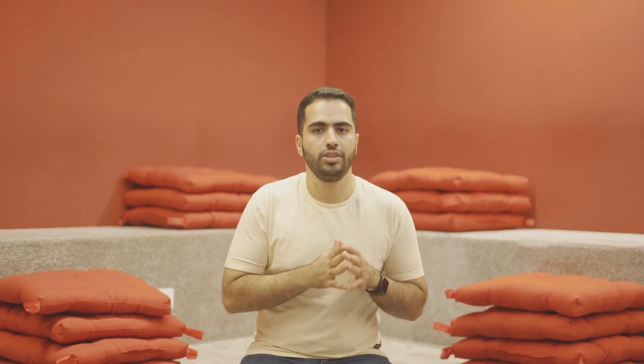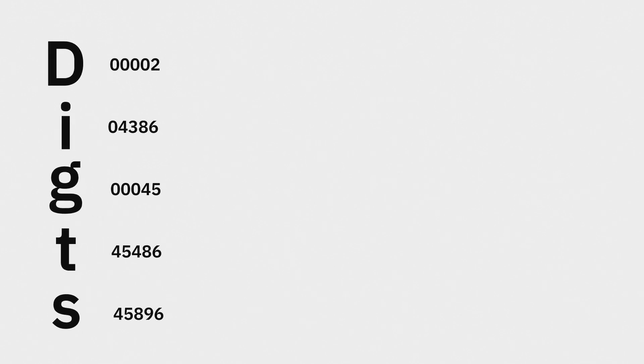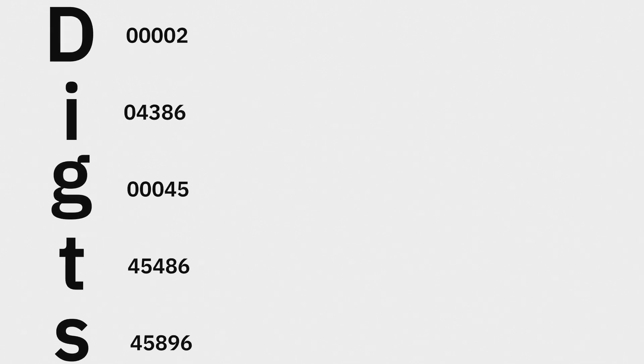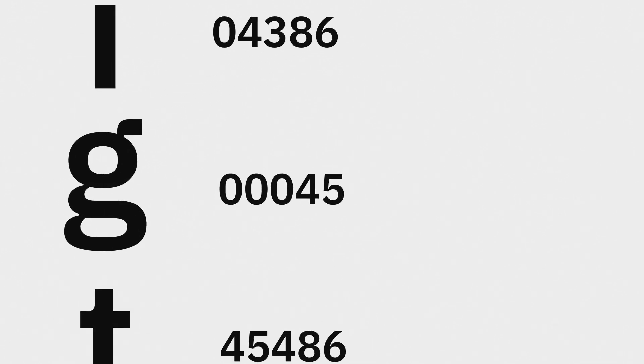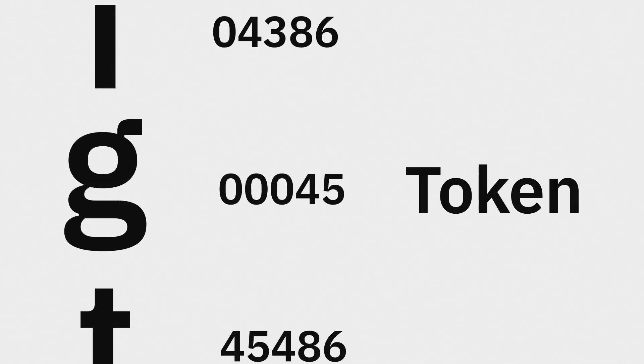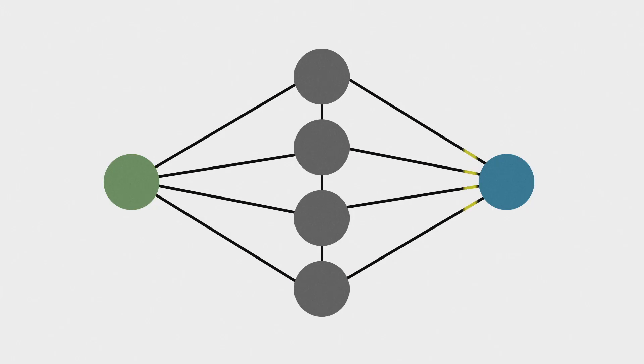Let's start with the inputs. LLMs use digits instead of letters. Each letter or word or character is represented by a digit we call tokens. Inputs and outputs for the model are processed through these tokens.